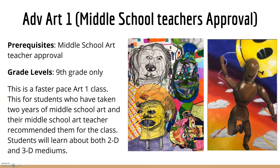Another option is Advanced Art 1, which requires middle school teacher approval and at least two years of middle school art. This is only a 9th grade level class and it's fairly small. We work at a really fast pace. We still teach the basics from Art 1 but we may skip things like a color wheel and dive straight into projects with more advanced techniques. We'll learn from both 2D and 3D mediums like blind contours, items coming to life using Prismacolors, large sculpture projects, clay, and screen printing — it depends on what students want to learn.